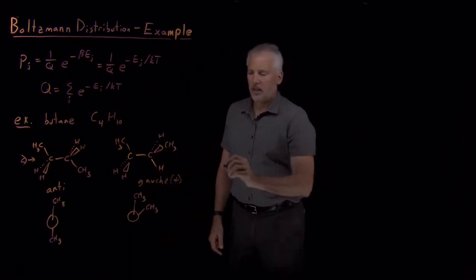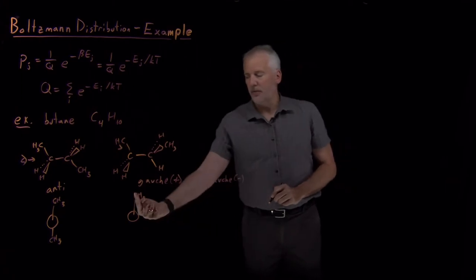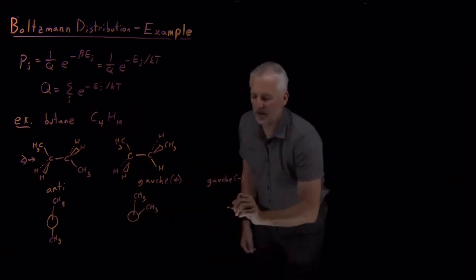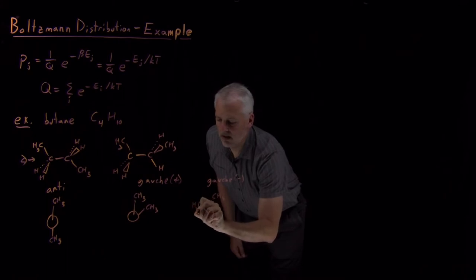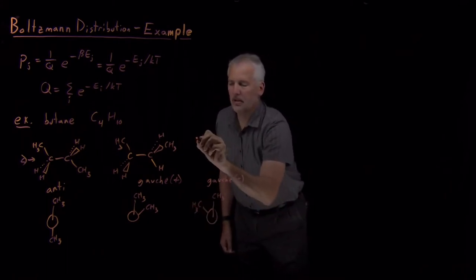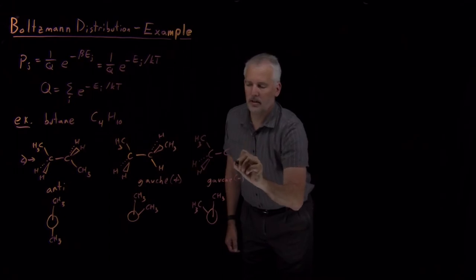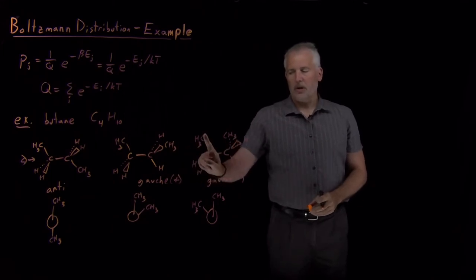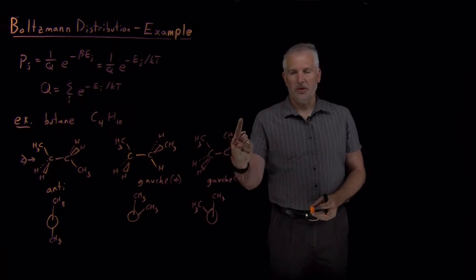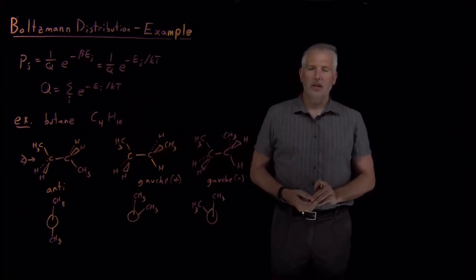The third conformation we need to think about is Gauche minus. The only difference between the Gauche plus and Gauche minus is that instead of rotating forwards by 60 degrees, it's rotated backwards by 60 degrees. Starting from the Newman projection, the three-dimensional conformation has the back methyl group rotated counterclockwise by 60 degrees. So those are the three different conformations of the butane molecule.